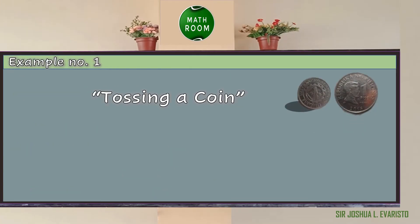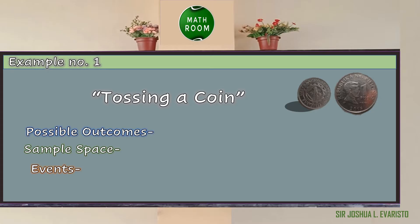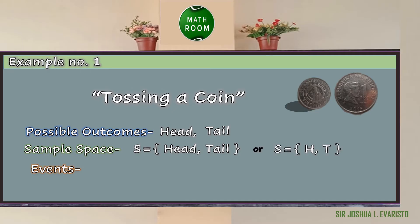Given that the experiment is tossing a coin, what do you think are the possible outcomes? We have a head and a tail, since we only have two sides in a coin. Thus, we can write the sample space as S is equal to the set of head and tail, or simply S = {H, T}, where H is for head and T is for tail. The events are showing a head and showing a tail.